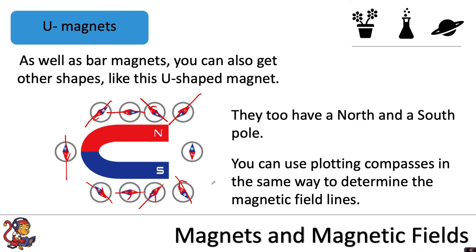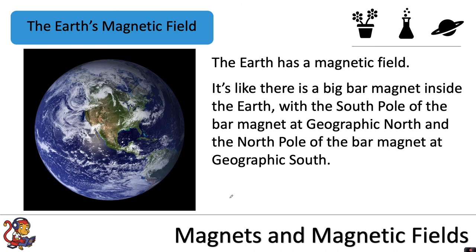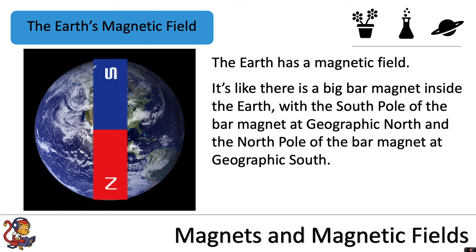The Earth has a magnetic field — it's as if there is a big bar magnet inside the Earth, with the south pole of that bar magnet at geographic north and the north pole at geographic south. There isn't actually a bar magnet within the Earth, but the Earth's magnetic field acts as though there is, with the magnetic south pole at our geographic north pole.